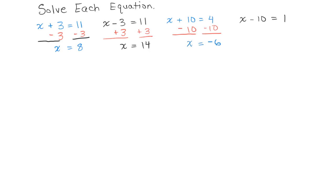And last one, we have X minus 10 equals 1. So we can add 10 to both sides so that we have just the X isolated on the left-hand side. And that will give us X equals 11.